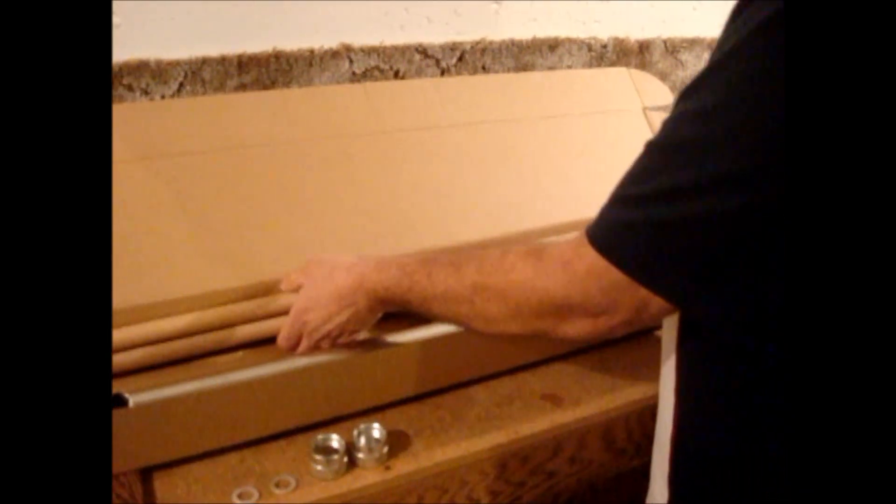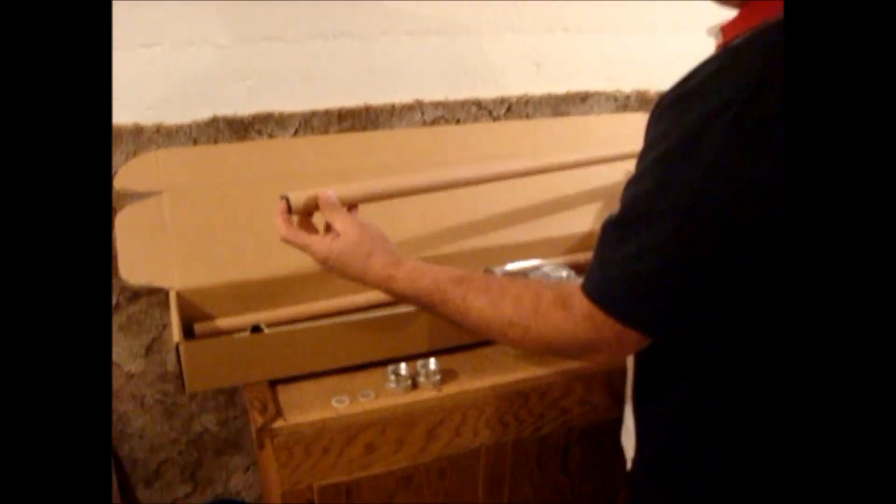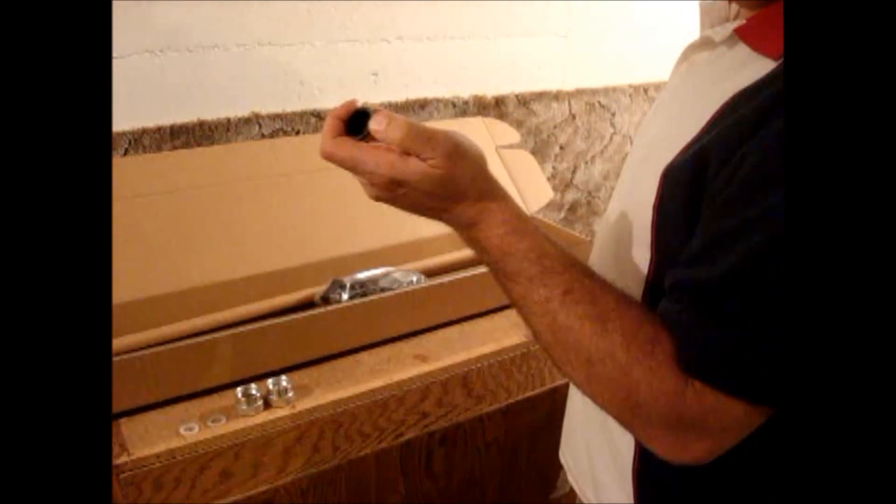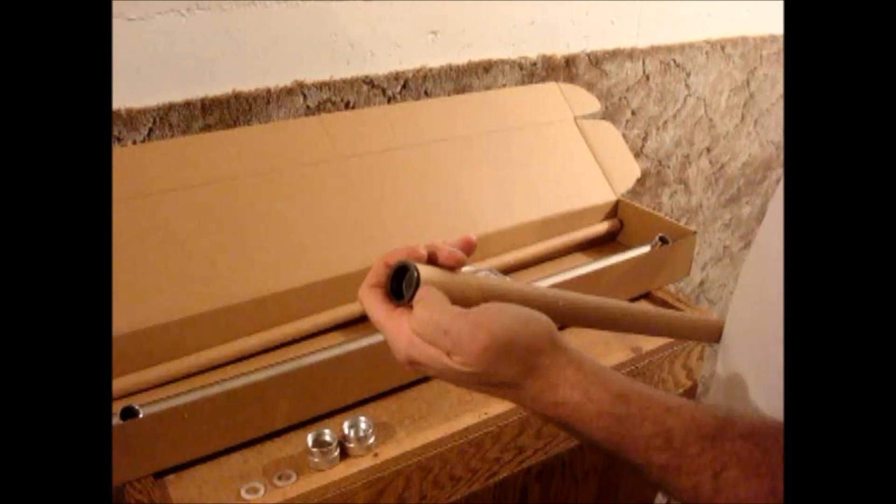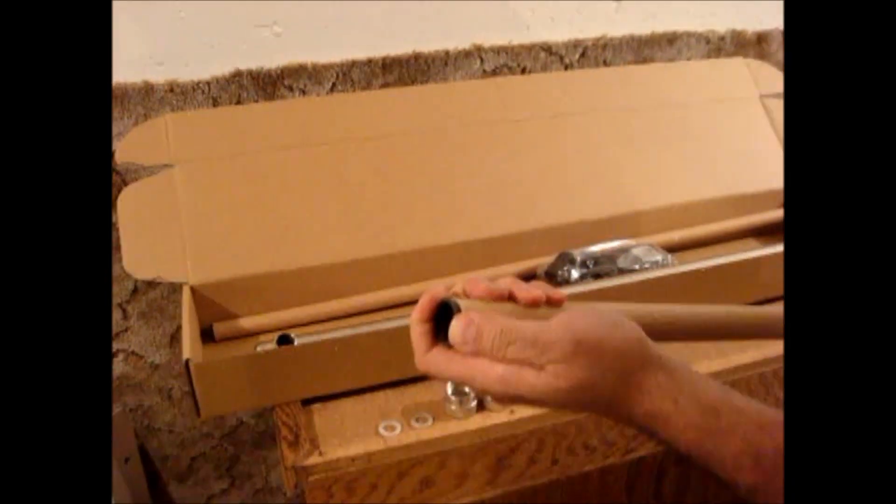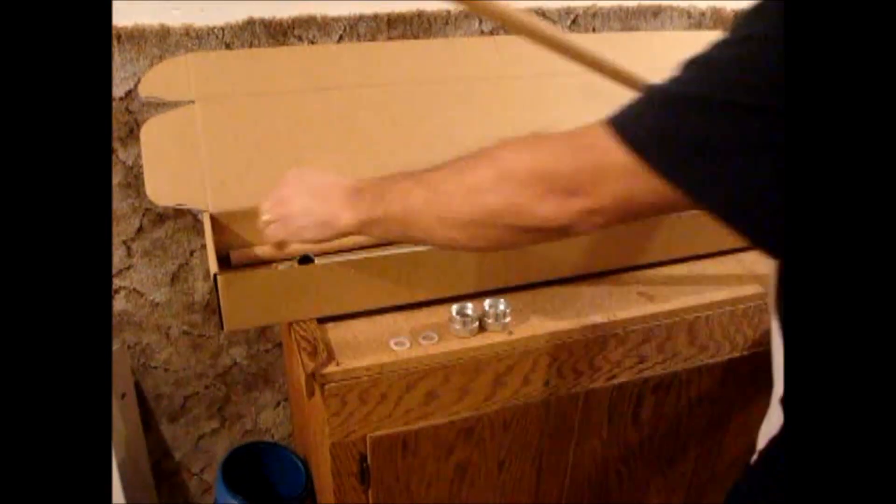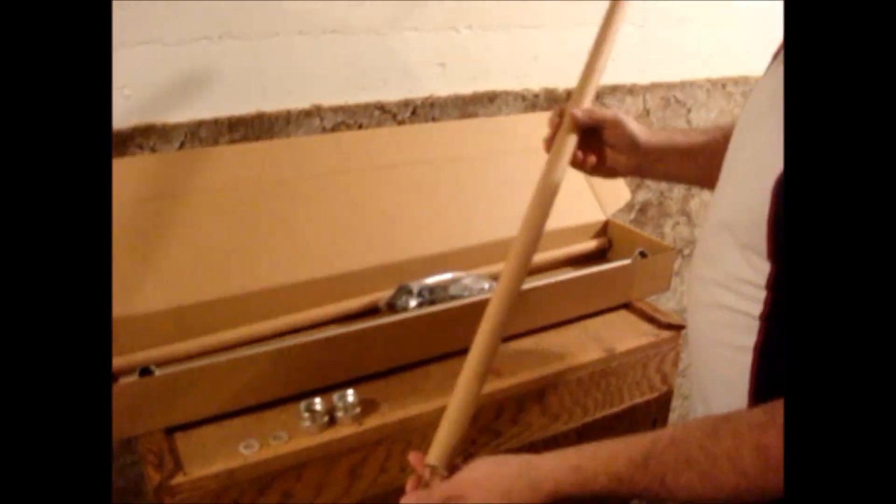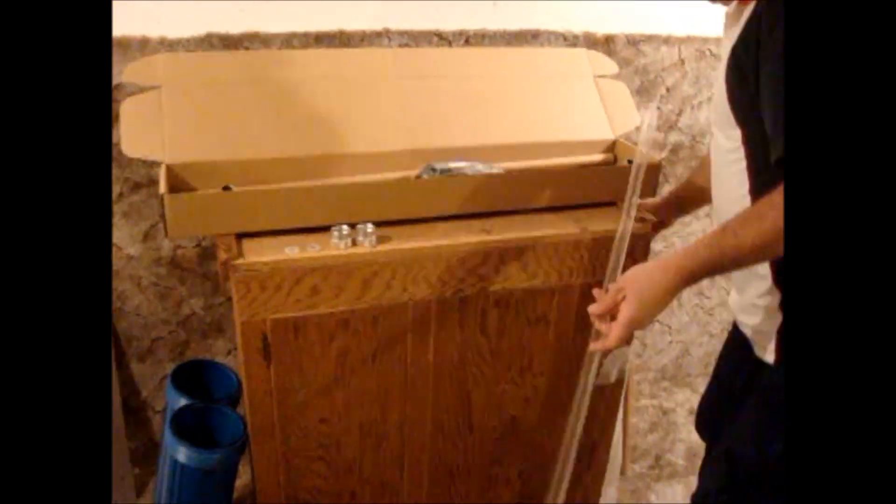The next step would be to remove the glass sleeve which is in the larger cardboard tube. They'll have caps on the ends that we've probably taped on so they wouldn't come out during shipping. So you'll have to cut the tape on one of the ends and remove the black cap from the cardboard tube. And the glass sleeve will slide out.